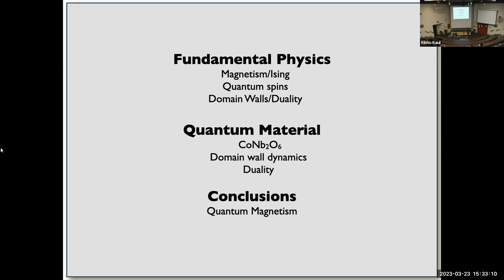The goal of our field in condensed matter theory is to study phenomena that occur in materials and try to build very simple models of quantum physics and statistical mechanics from these materials. After this introduction, I'll tell you about my research on the material cobalt niobate.